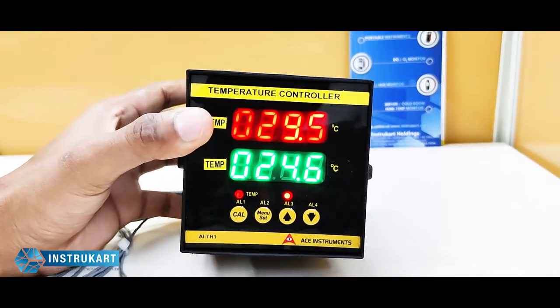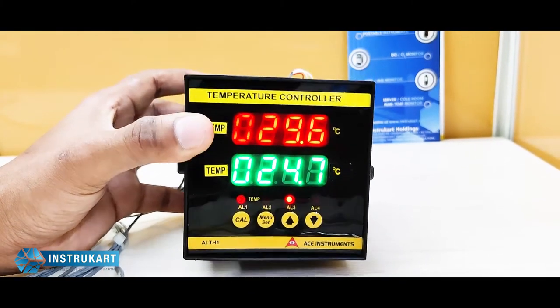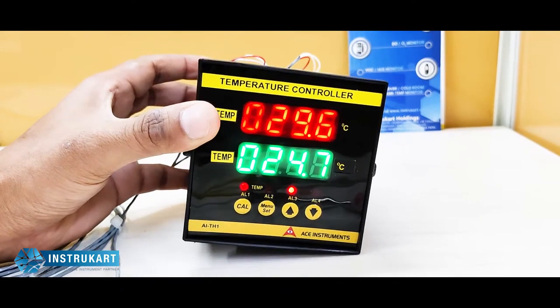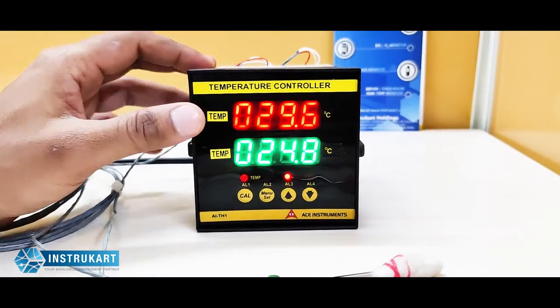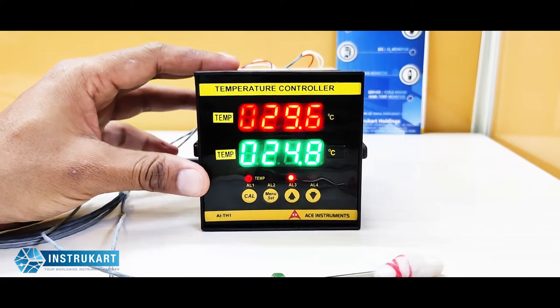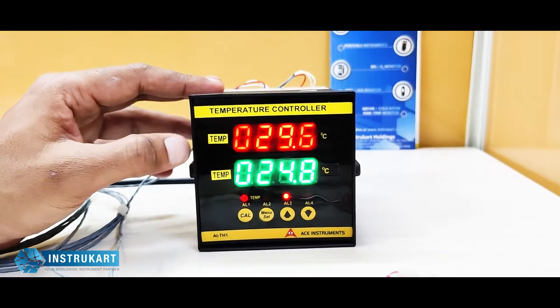These are panel mounted body with a dimension of 96 x 96 x 110 mm. This has got a power supply of 230 volts AC.